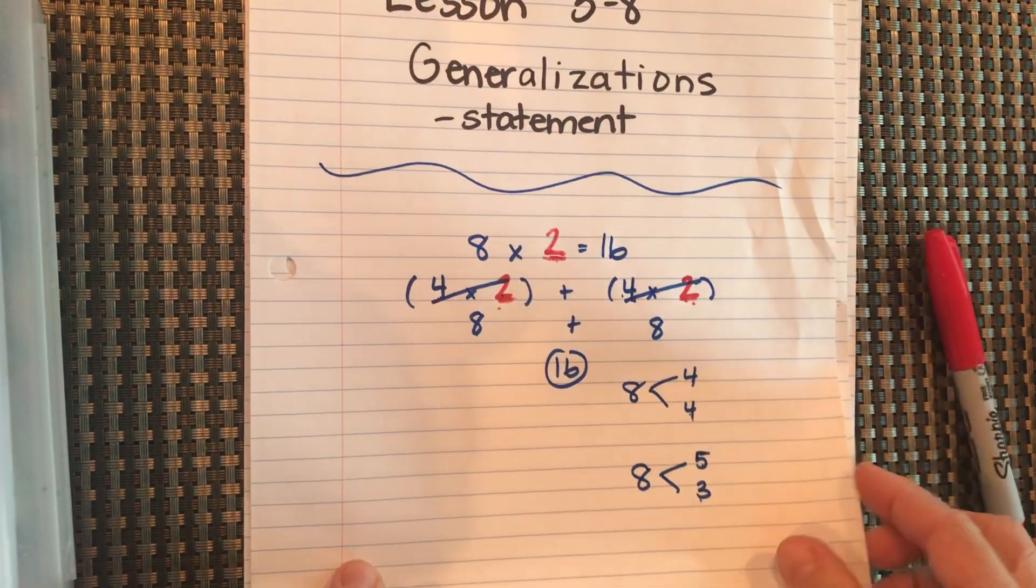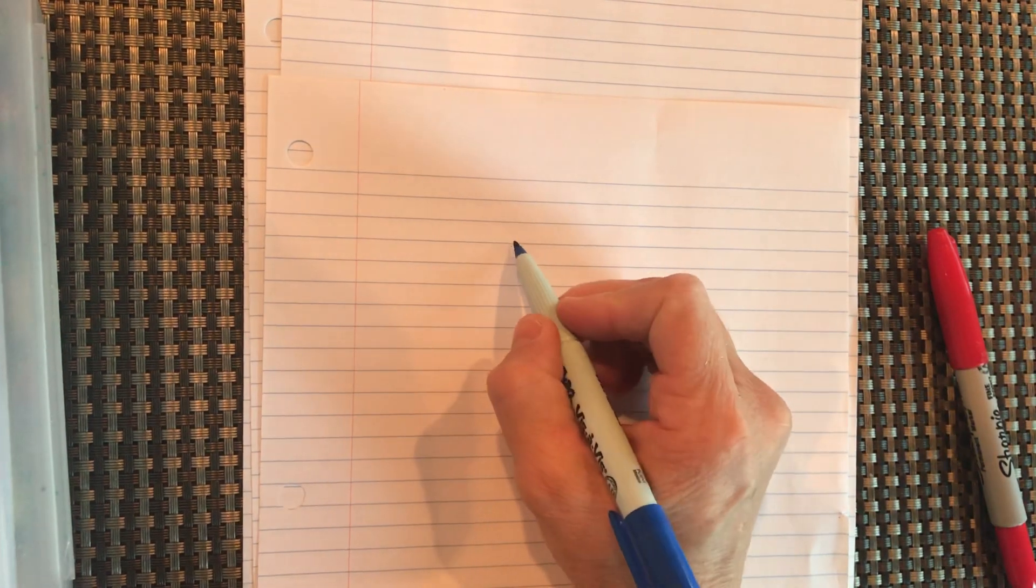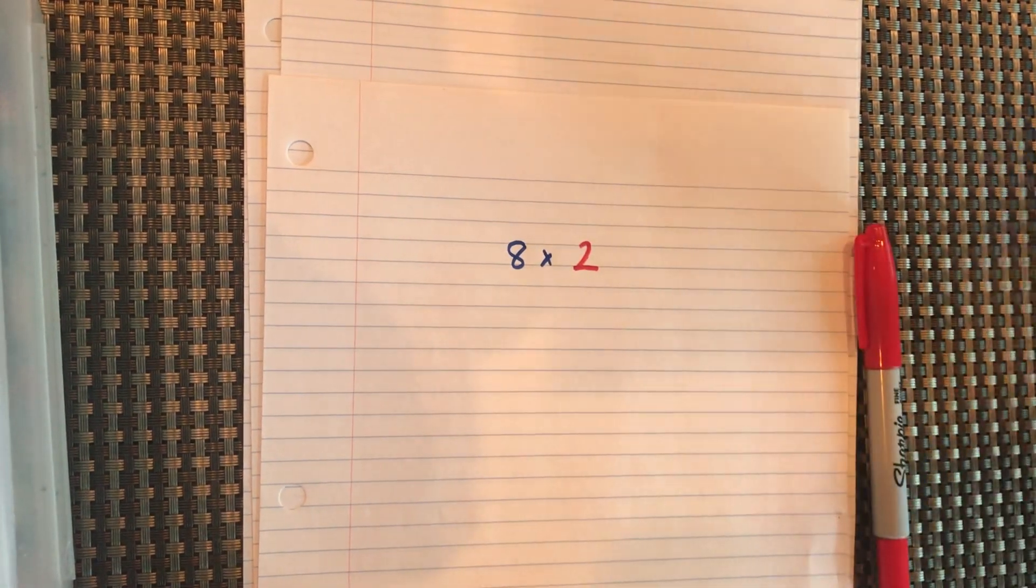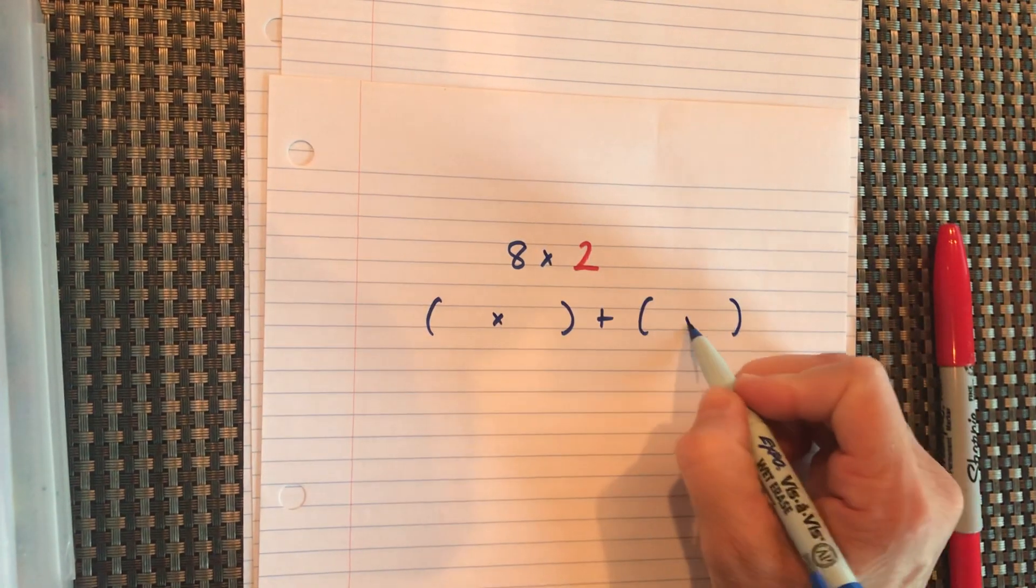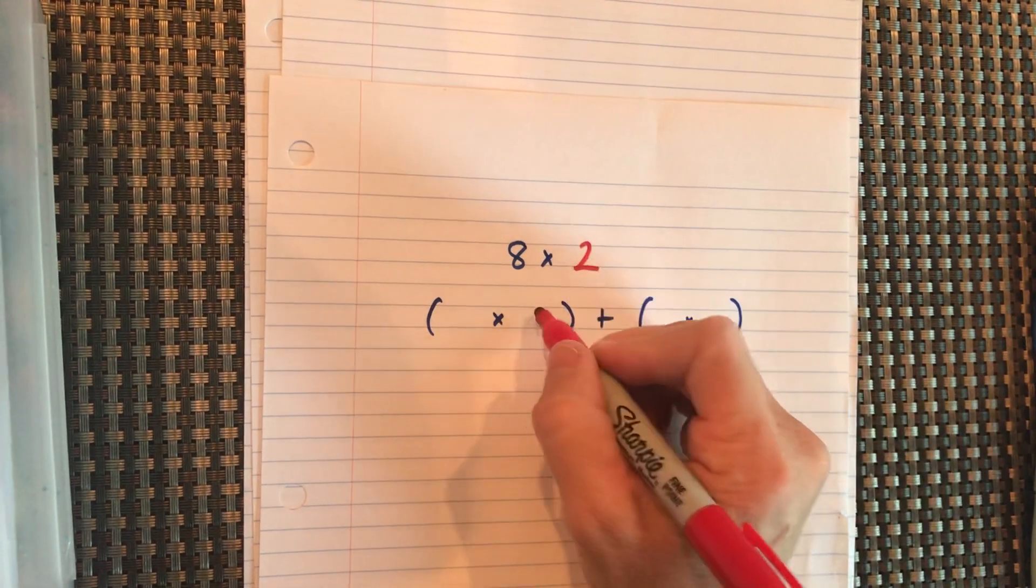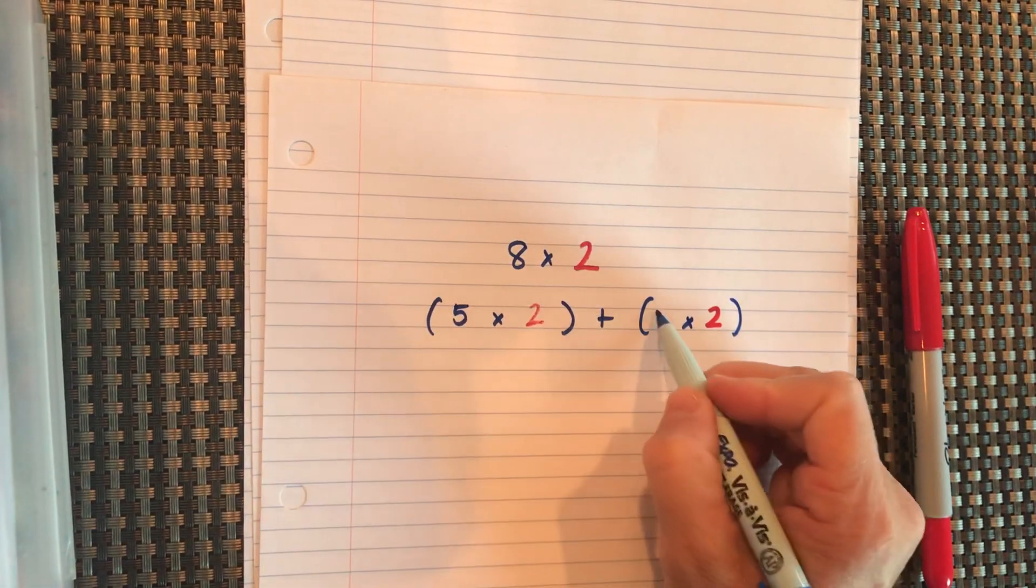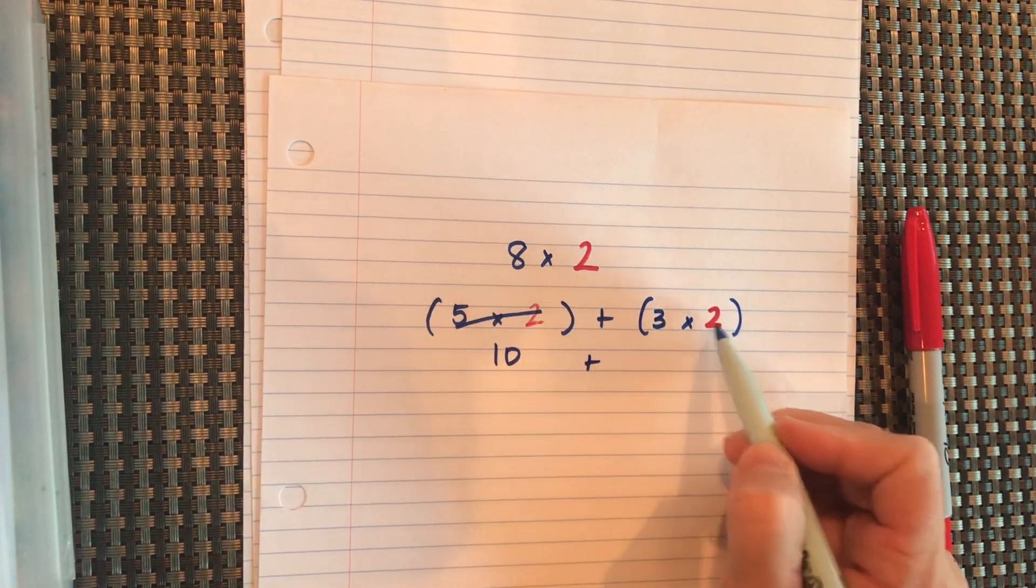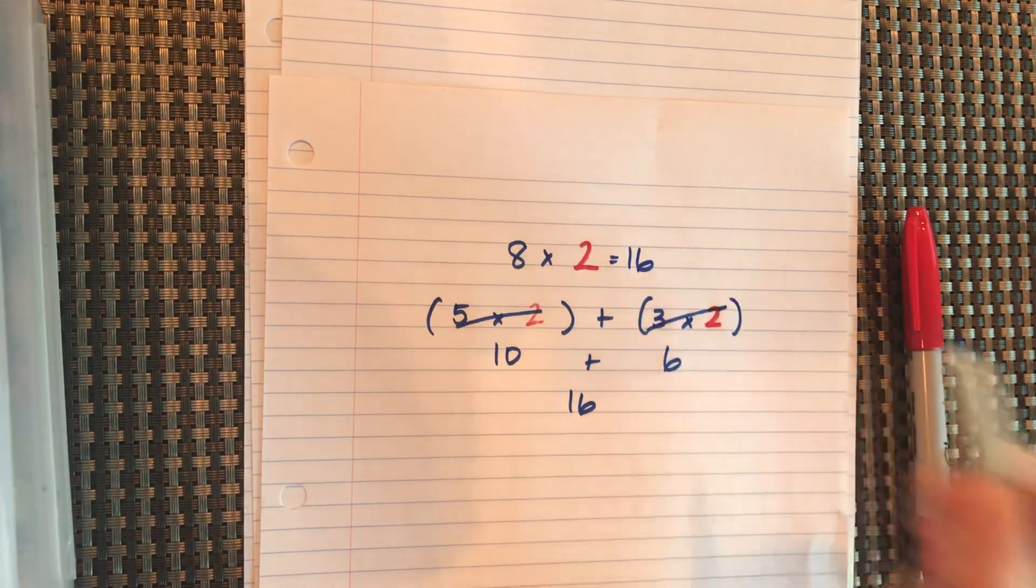Let's see, you did 2 here. Okay. Whatever number you wrote here should be the same right there. You could have broken your 8 up into 5 and 3. So, 5 times 2 is 10. 3 times 2 is 6, and 10 plus 6 is 16. Okay.